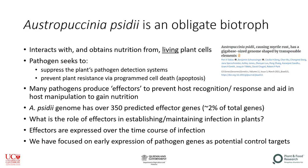Austropuccinia psidii is an obligate biotroph, which means it must interact with and obtain nutrition from living plant cells. In doing that, the pathogen has to suppress the plant's pathogen detection systems and prevent plant resistance via programmed cell death, which is the basis of leaf resistance. Many pathogens produce effectors to interact with their hosts and ultimately to gain nutrition and complete their replication cycle.